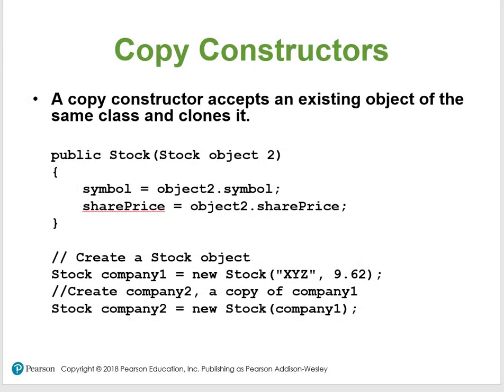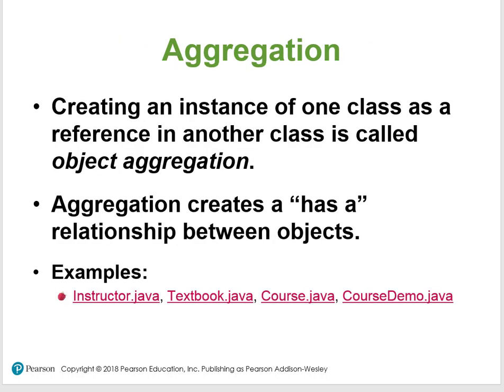Hey, this is Chapter 6 Part 5 of the lab. I'm about to get started on aggregation. Aggregation is a very important and somewhat abstract concept to understand. Think of a UML inside of a UML — that's how you can see how aggregation takes place on fields.